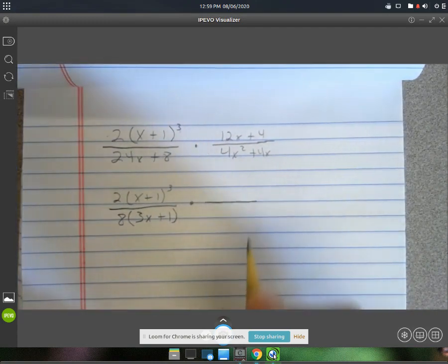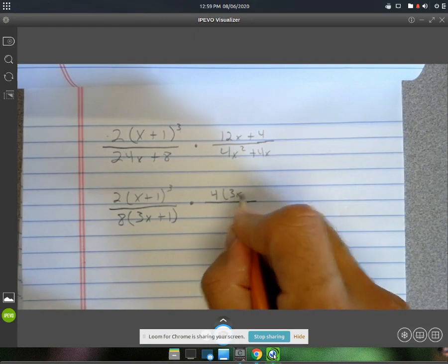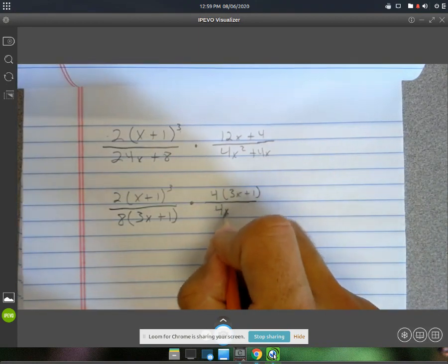Alright, over here we've got 12 and 4. You can factor a 4 out of both of those. That'll be a 3x plus 1. In the bottom, they both have a 4 and they both have an x. So let's factor out a 4x.